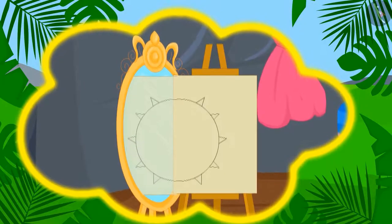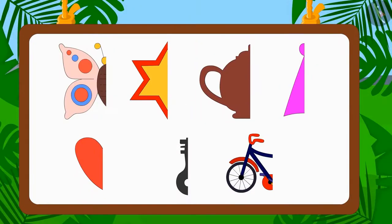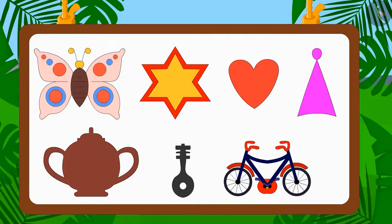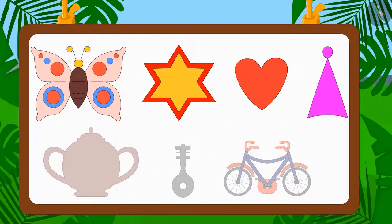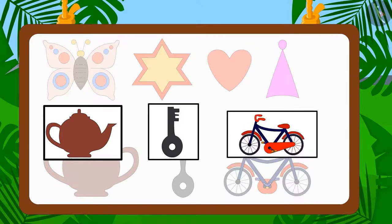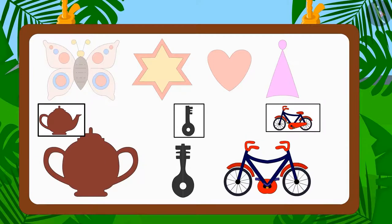Do you remember Shere Khan's magical mirror? Can you identify which of these incomplete images will become a complete image in the mirror? These are the images that will be complete in the mirror because they are made of two similar parts. And these images will not be complete in the mirror because they are not made of two similar parts.